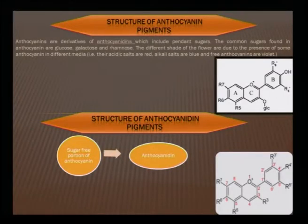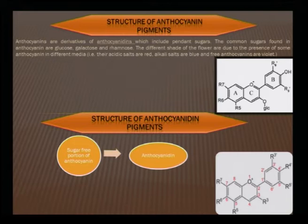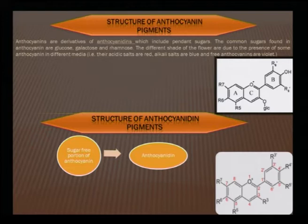Looking at this slide, you can see that the ABC rings are connected, and there is a sugar pendant hanging — OGlc. This OGlc represents the sugar moiety, and this sugar could be glucose, galactose, or rhamnose. It could be other sugars also, but predominantly these are the three sugars that are naturally present. When these include the pendant sugar, the anthocyanidines are then called anthocyanins.